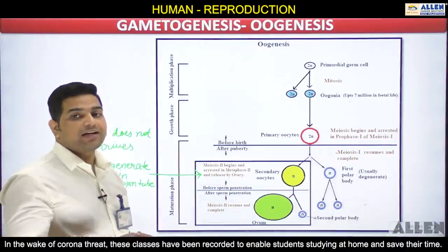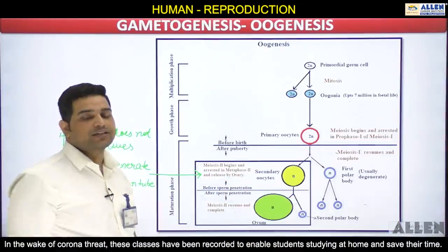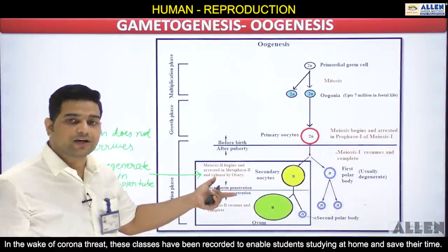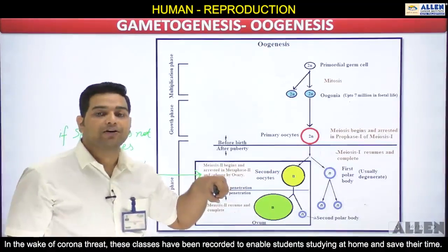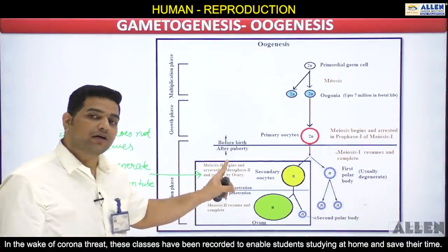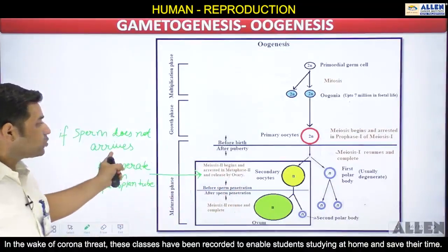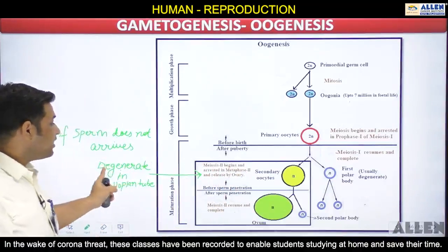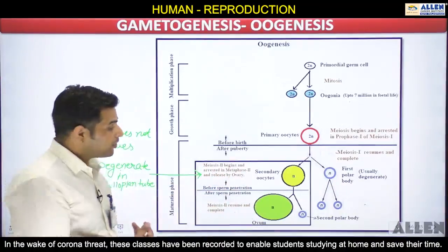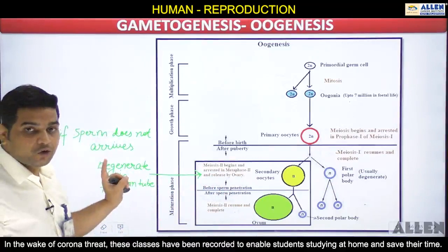In this arrested stage, the ovary liberates — releases — the secondary oocyte. It is collected by the fimbriae of the fallopian tube and transferred to the ampulla of the fallopian tube, where it waits for the sperm to arrive. If the sperm does not arrive, the secondary oocyte degenerates inside the fallopian tube and will never undergo the completion of division.